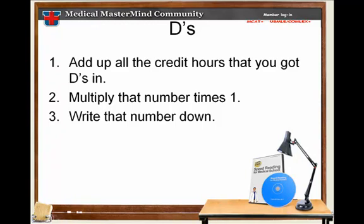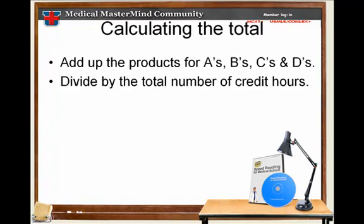But you'll see in a minute that that's going to be a divisor. So the next thing you're going to do is when you wrote down those products for A's, B's, C's, and D's, add all of those up. It's going to be a big number. And this time you're going to divide by the total number of credit hours for every class which you just added up the grades for.